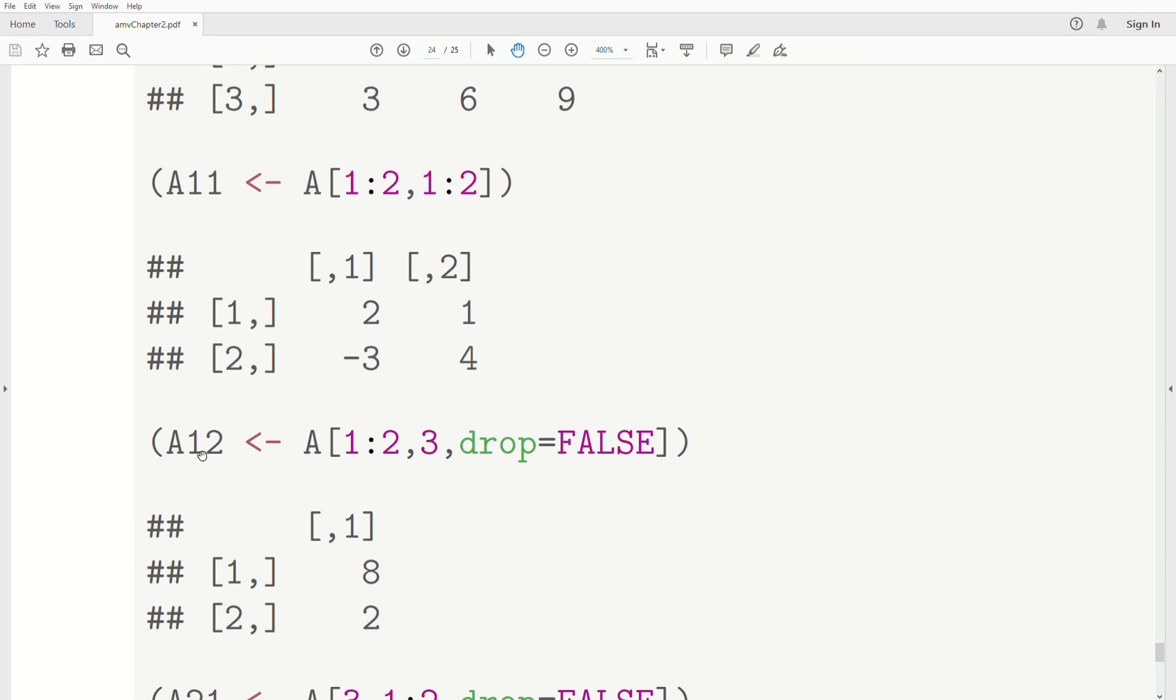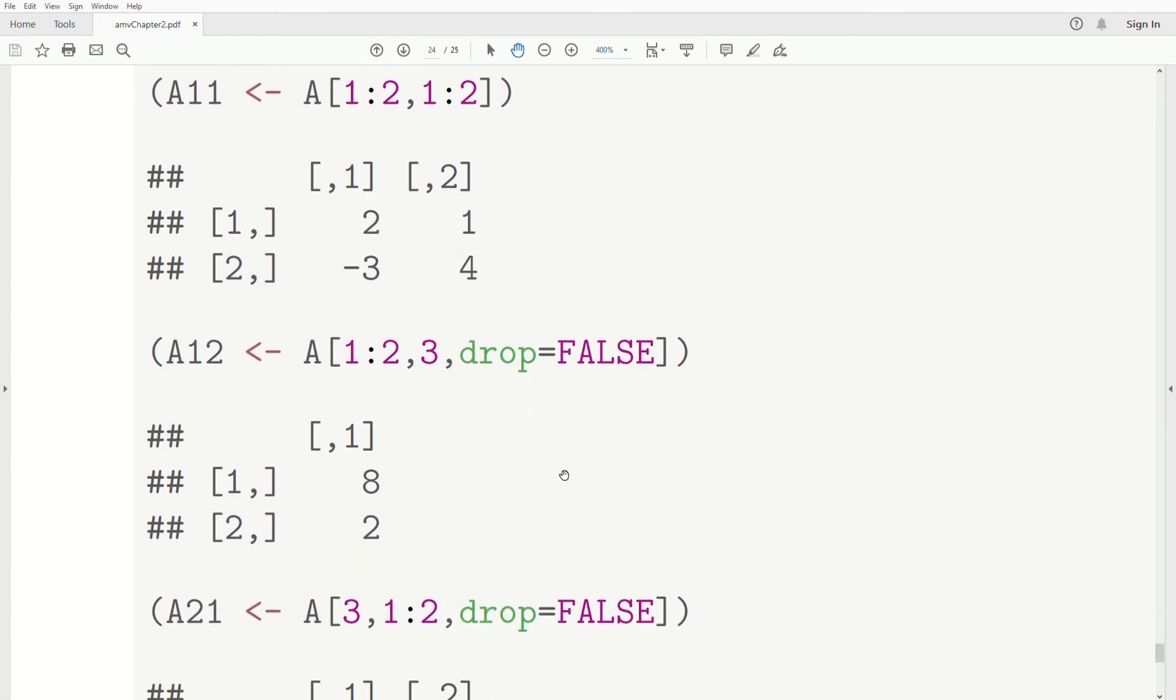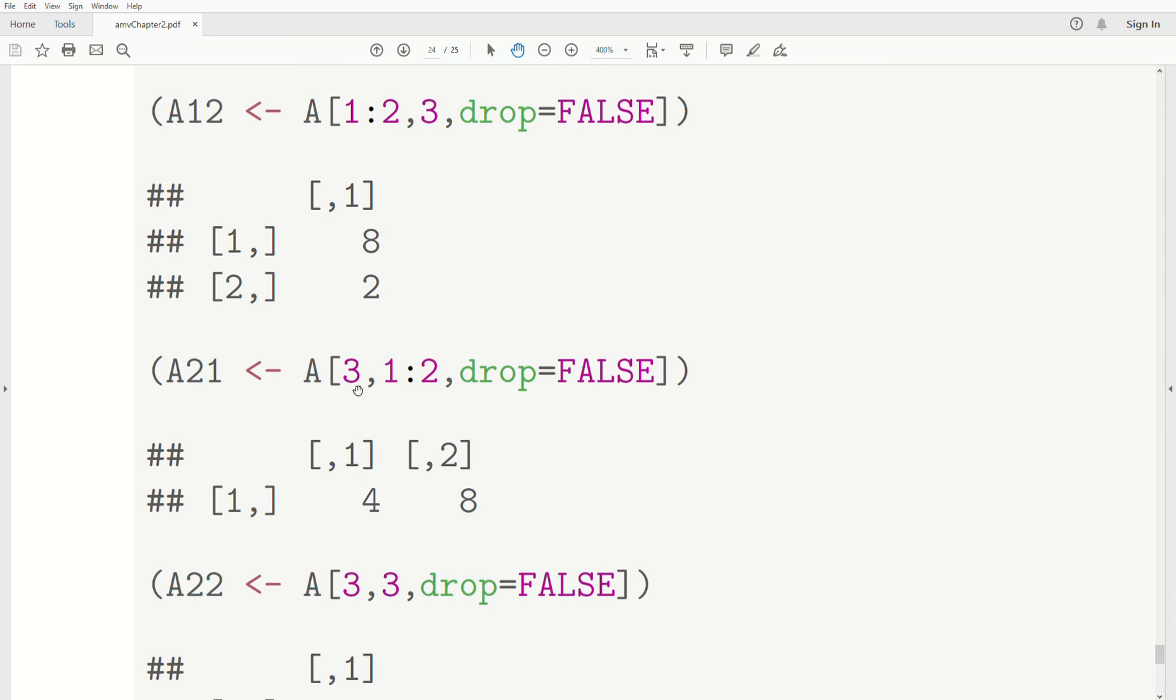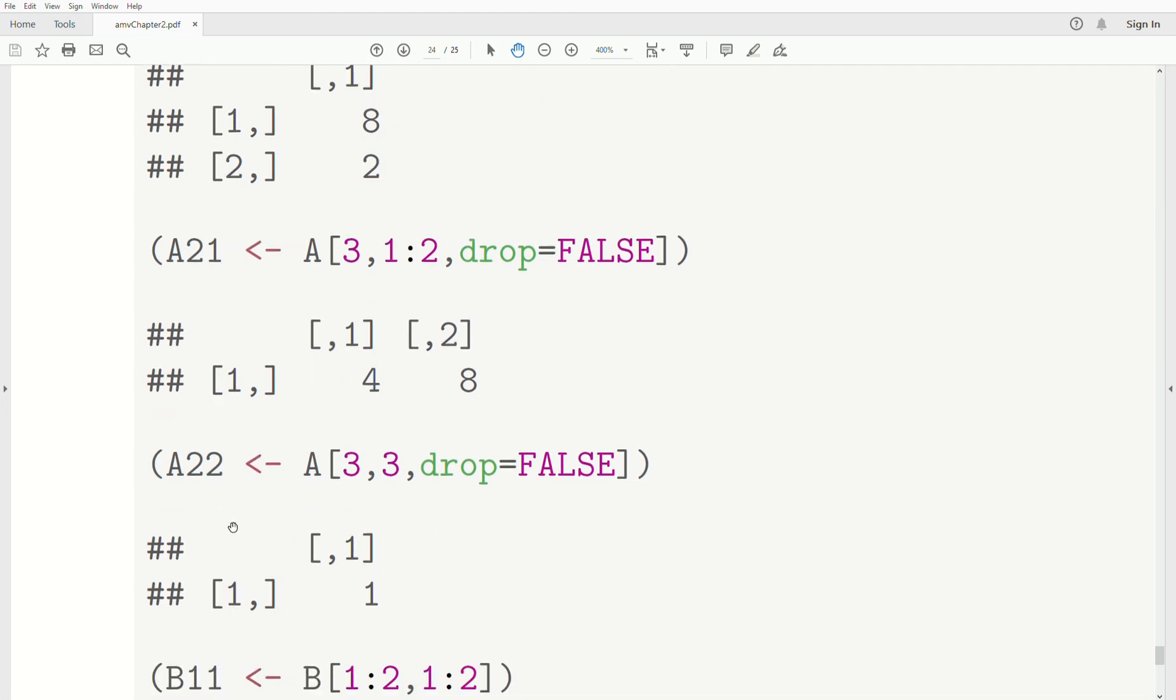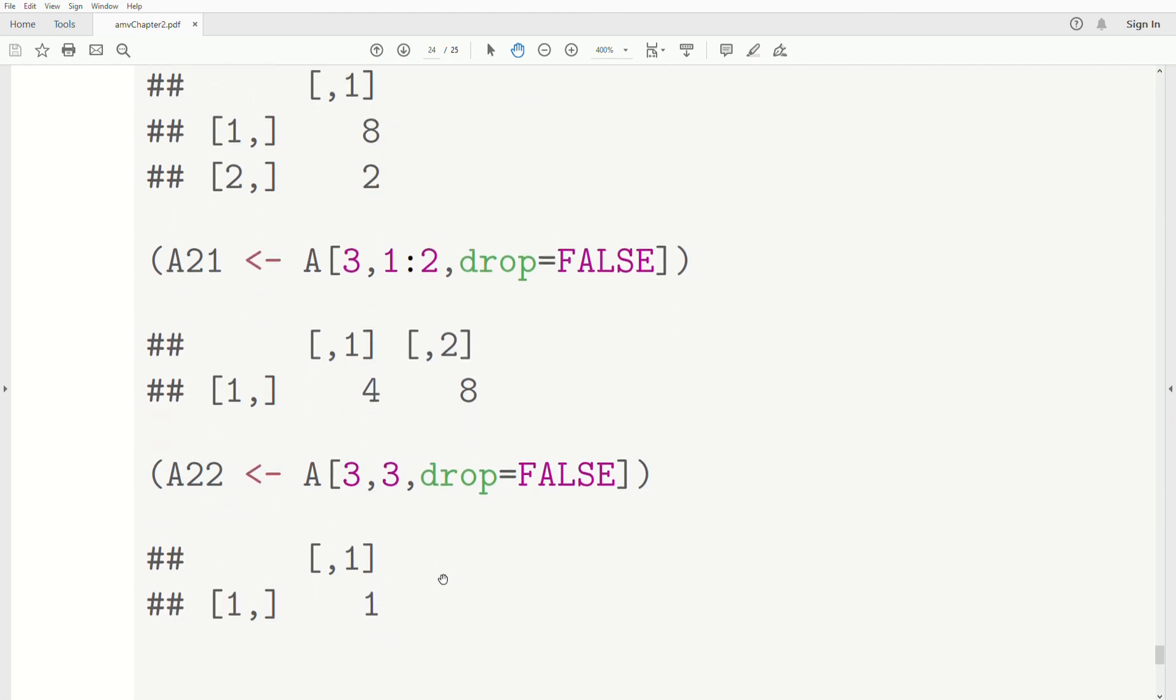And we do that with the other matrices. So this is rows 1 and 2, column 3. And we store it in A12. Now notice it's a vector. So if we use this approach to grab that little submatrix, R wants to make it a vector and not keep the structure of a matrix. So we have to say drop equals false. Don't drop the matrix structure. And then here we have A, row 3, columns 1 and 2. And that's this. And A22 is row 3, column 3. And it's just a 1.